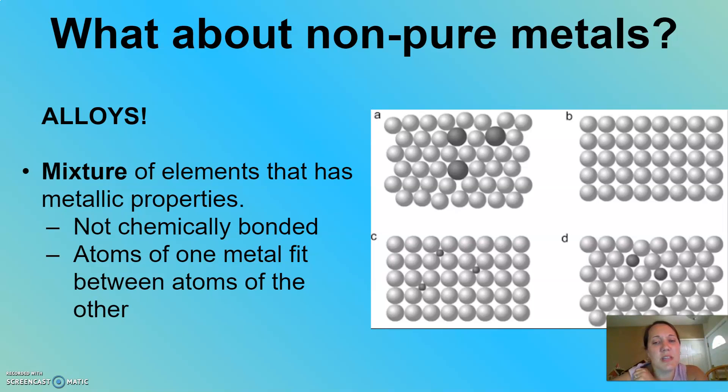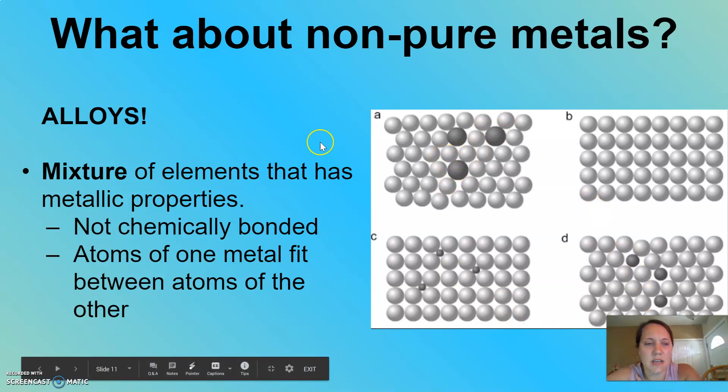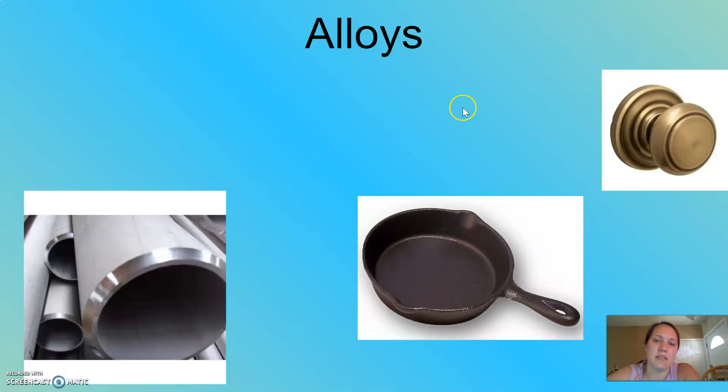So the atoms of one metal can fit between the atoms of the other, like in C, they could replace atoms of the other, like in A or D. It just kind of depends on what the alloy is.